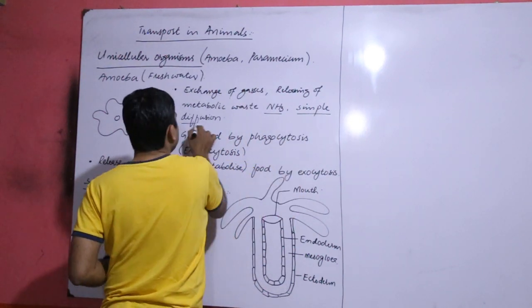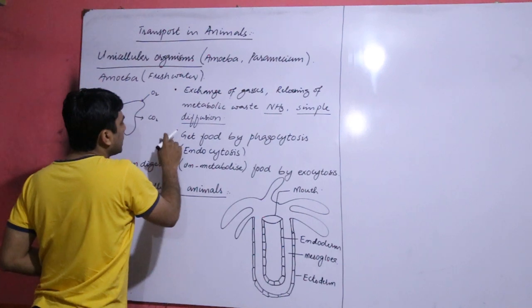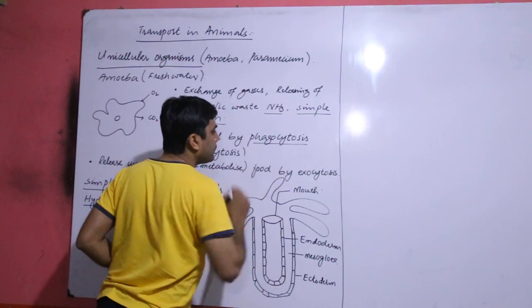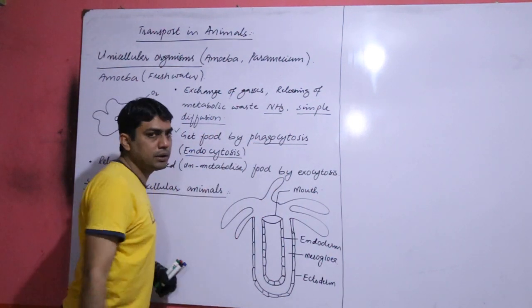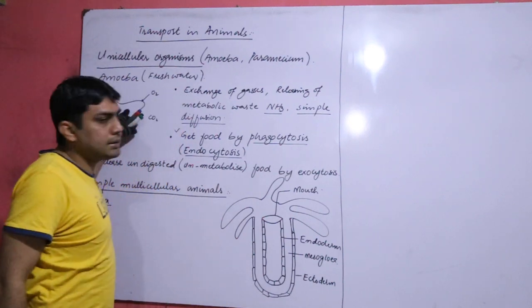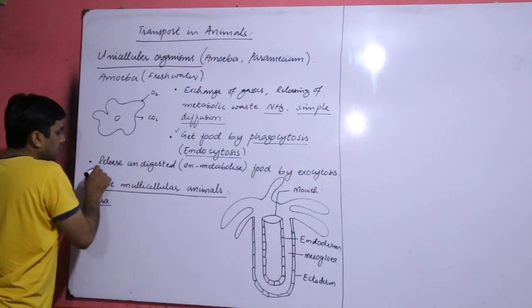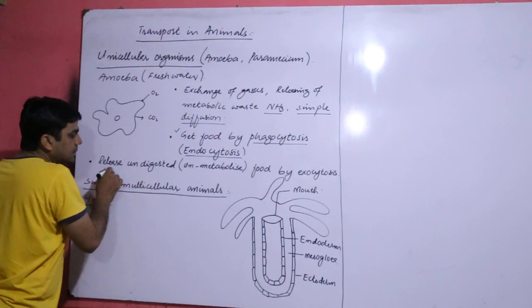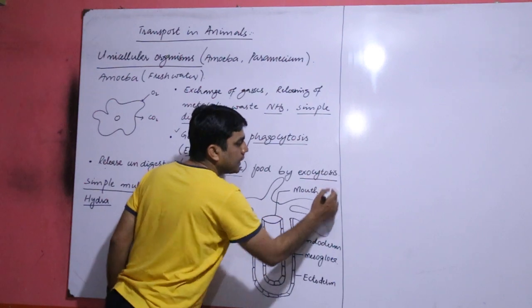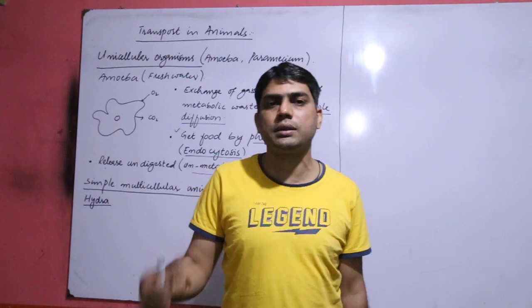The unicellular organism gets their food by the process of phagocytosis, and phagocytosis is also known as endocytosis because the cell takes something in. After digestion this unicellular organism leaves their undigested or unmetabolized food or waste by exocytosis process. You already studied about endocytosis and exocytosis in chapter number 4.